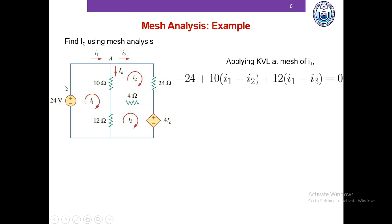If we write KVL in the mesh of I1, we start and go in the clockwise direction. We see the negative terminal of this voltage source, so it's minus 24. We arrive at the 10-ohm resistor going top to bottom — I1 goes from top to bottom but I2 goes from bottom to top, so the total top-to-bottom current is I1 minus I2, giving 10(I1 minus I2). Similarly, the current going from top to bottom in the 12-ohm resistor is I1 minus I3, so we write 12(I1 minus I3). Our KVL equation accounts for all three elements and equals zero.